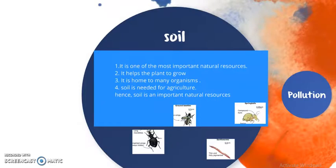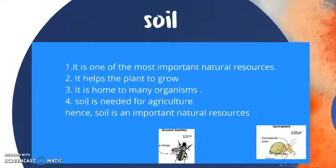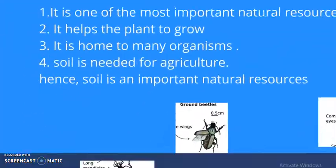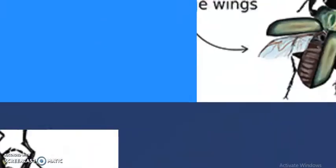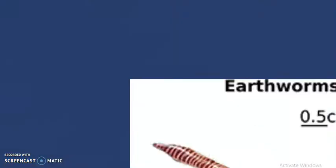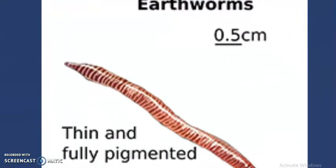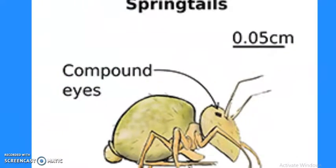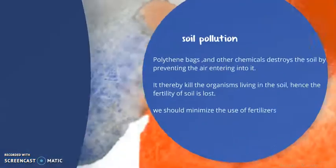We can see various types of organisms in the soil, like beetles — various types of beetles — and the earthworm, which is also known as the farmer's friend. They will maintain the soil fertility. Another type is the springtail beetle.